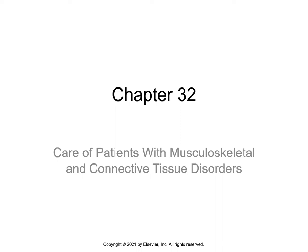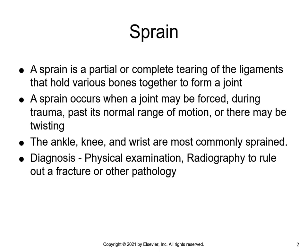The care of patients with musculoskeletal and connective tissue disorders, Chapter 32. The most common sprain injuries occur either in the ankle, the knee, or the wrist.